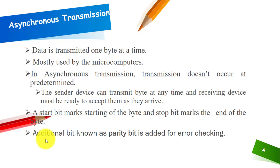If someone asks what the role of a parity bit is and where a parity bit can be used in transmission, you can simply answer that a parity bit is an additional bit that is used in asynchronous transmission in order to perform error checking.